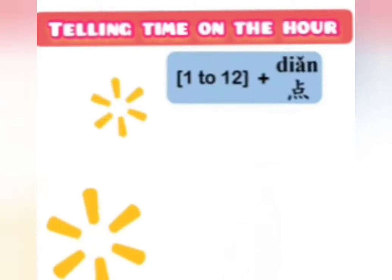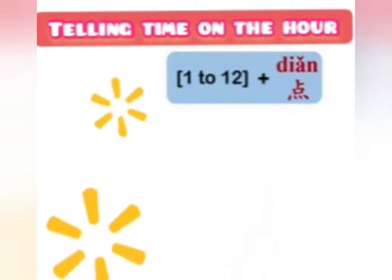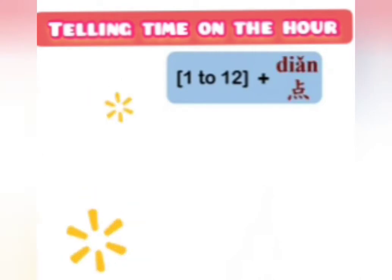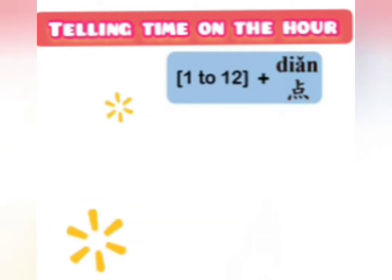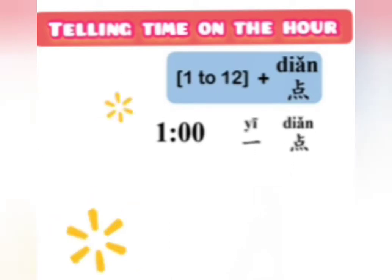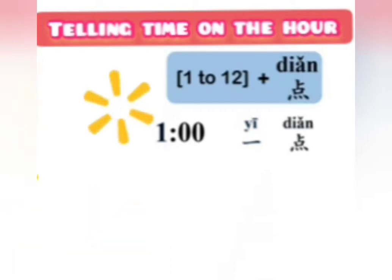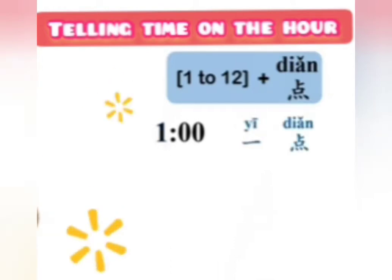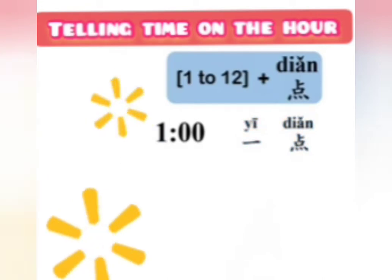Please repeat after me: 点, 点, 点. For example, 1 o'clock is 一点. 一 is the number 1, so 一 plus 点 equals 一点. 一点 — 1 o'clock.